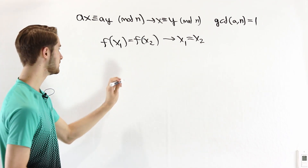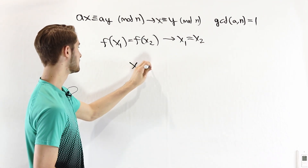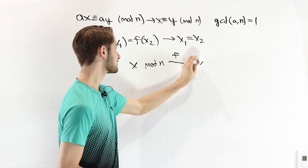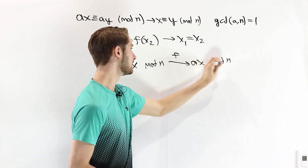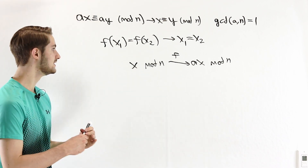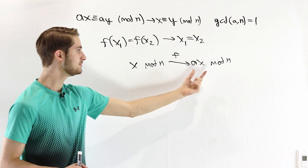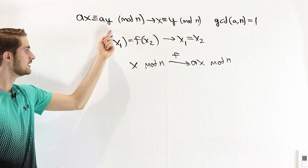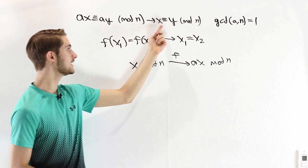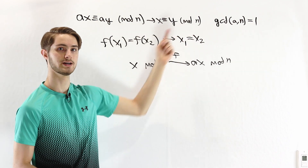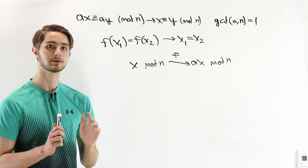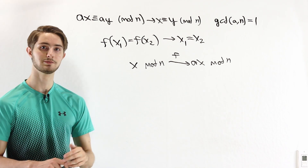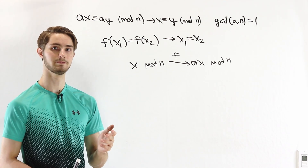If we think about the function that maps x mod n to ax mod n, this function is injective. If we get the same output for two different numbers x and y, then x and y must be congruent mod n. This is an important property used in proofs such as Fermat's Little Theorem.